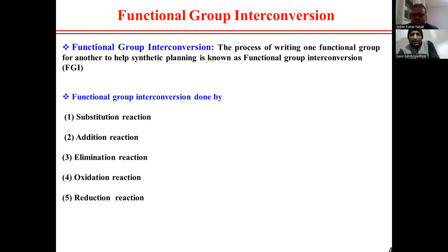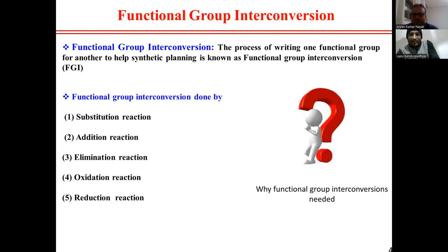Functional group interconversion (FGI) is a process in retrosynthesis. It is the process of converting one functional group to another to help build a synthesis — designated as FGI. The simple reactions we usually perform include substitution, addition, elimination, oxidation, and reduction reactions.